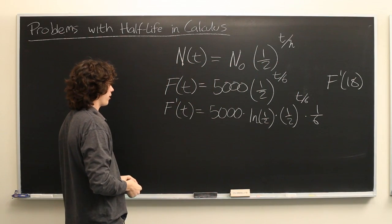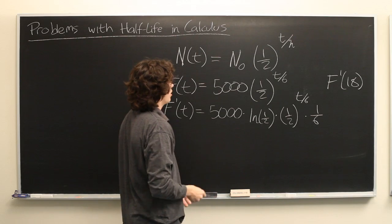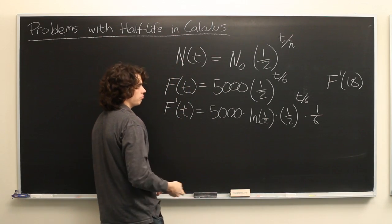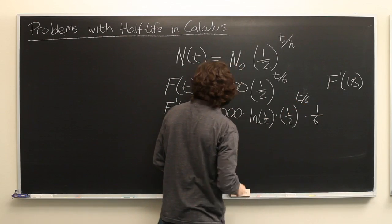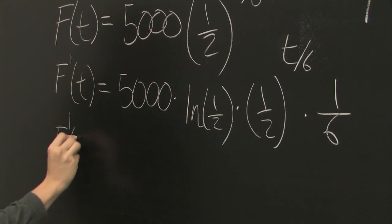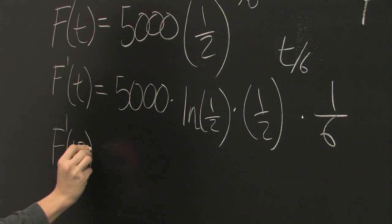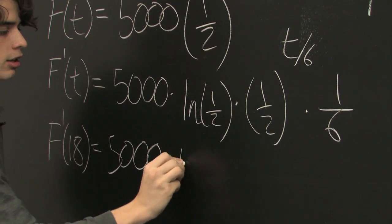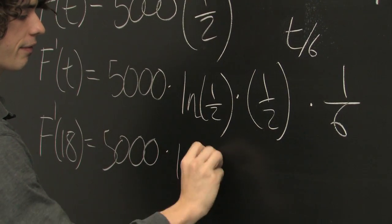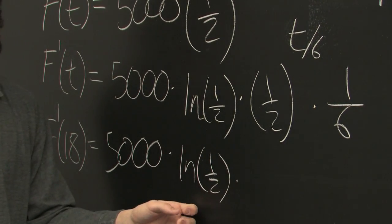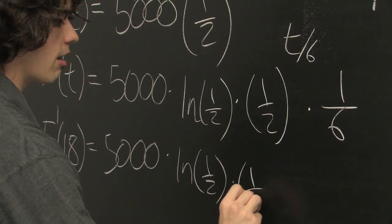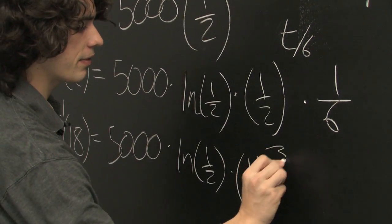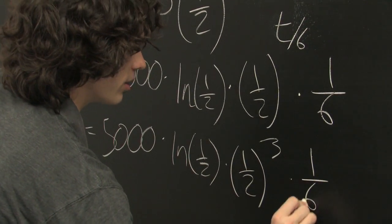So there's a lot going on here, but it's easy enough to simply whip out your calculator, plug in 18, just throw the 18 in here, see if we can simplify that a little bit. So we get 5,000 times the natural log of one-half, which is going to be a negative number by the way, times one-half, 18 divided by 6 is 3, times one-sixth.